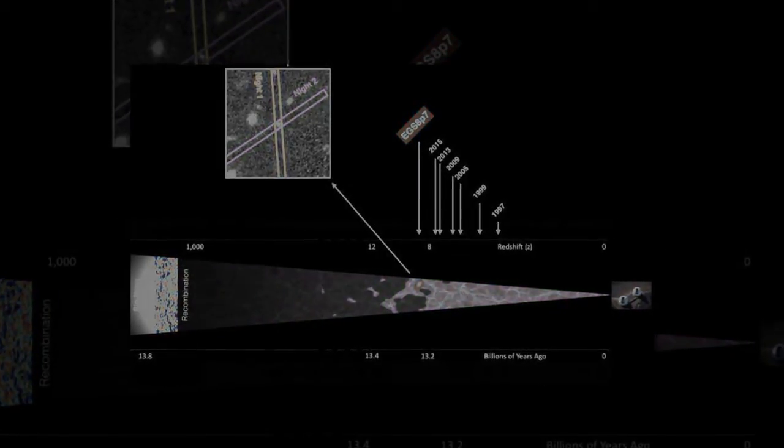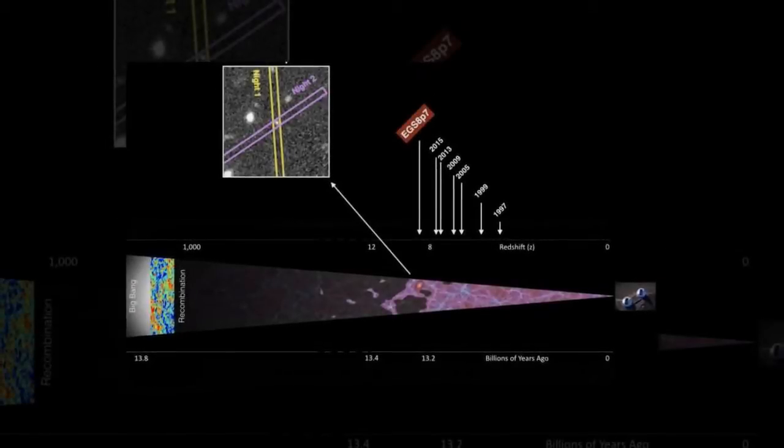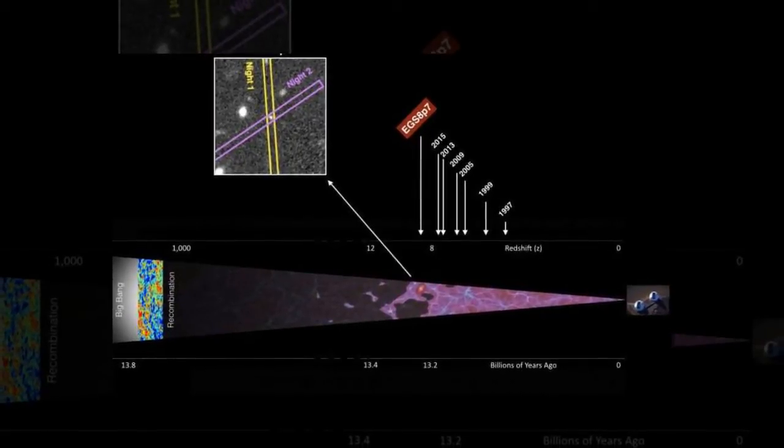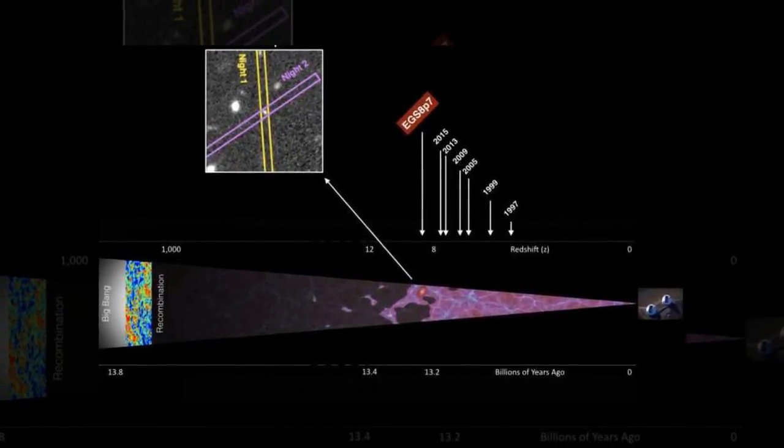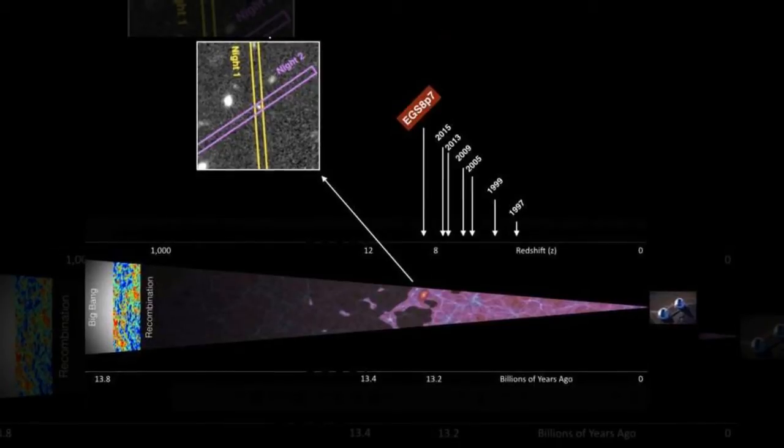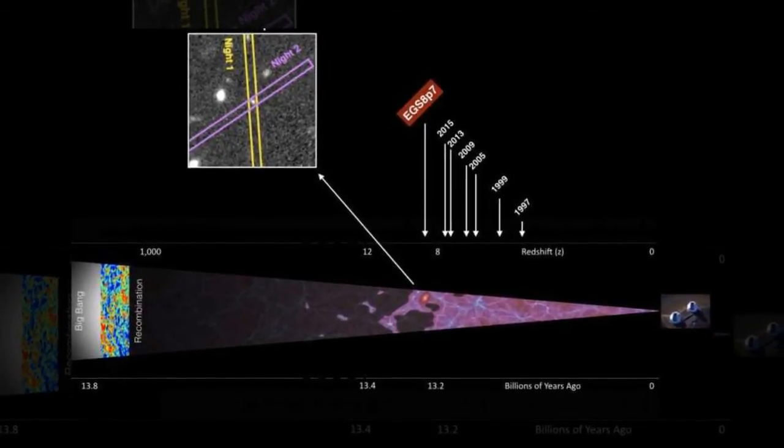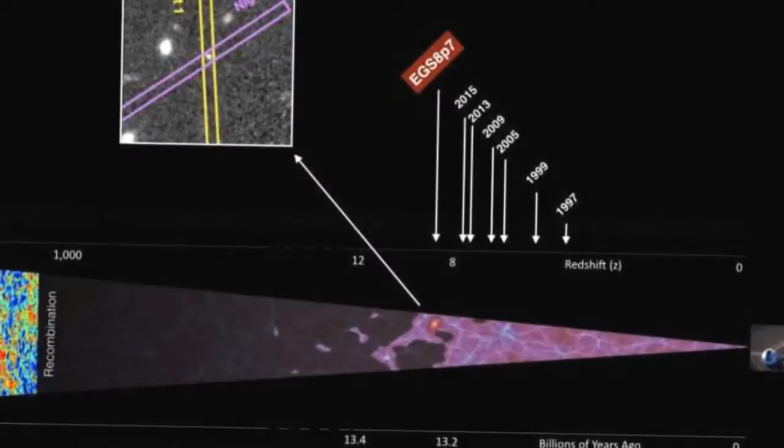Additionally, the method in which the galaxy called EGSY-8P7 was detected gives important insight into how the very first stars in the universe lit up after the Big Bang. The paper will be published shortly in the Astrophysical Journal Letters.